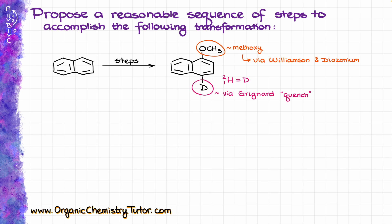Deuterium, chemically speaking, is hydrogen, which means it is not a director whatsoever. However, the methoxy group is an ortho/para director. So once we have our methoxy group on our ring, it will be significantly easier to put anything into the position where we want it to be. With all of that in mind, let's start working on our synthesis.